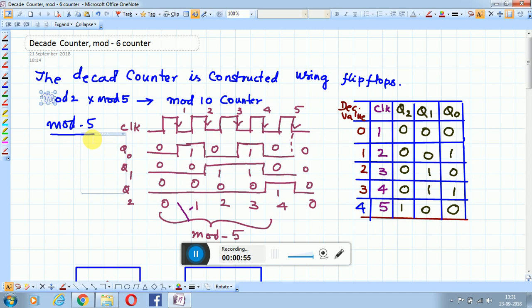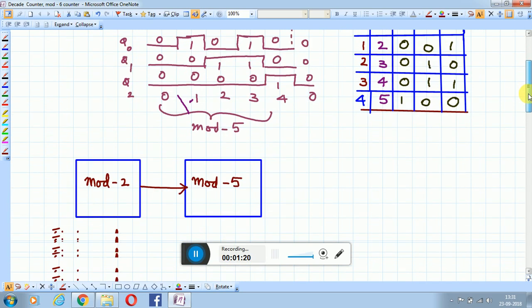This is the sequence in the timing diagram: 01010, 00110011, 00001111. You can see the clock pulses are 5, and the decimal value ranges from 0 to 4, so this is counting from 0 to 4.